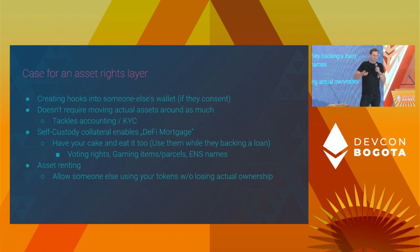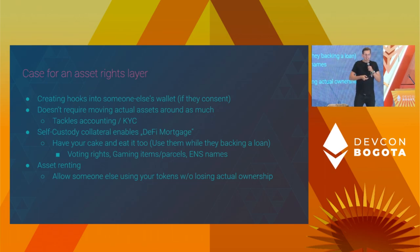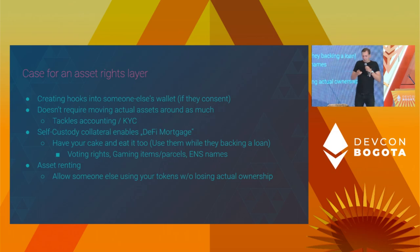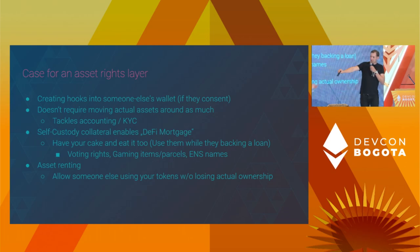Another useful thing is that you can also enable asset renting. You can reverse the case and essentially give someone the right to transfer that right to someone else, but keep the token transfer right and keep the ownership of the asset and withdraw it later if certain criteria are met. So this is the basic intro, and now passing the word over to Naim for the interesting stuff.